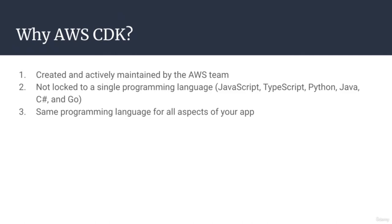If you go with something like TypeScript, which is quite popular nowadays for multiple purposes, you basically have the option to use the same programming language for all aspects of your app, including the backend, frontend, and infrastructure as code. Having a Node.js app with TypeScript and also a frontend single page application like Angular or React based on TypeScript will mean that your whole application is just written in TypeScript. Your developers will love you. CDK has very good TypeScript support, so this is usually the recommended path to go.